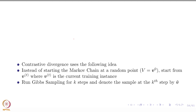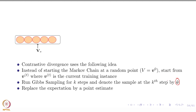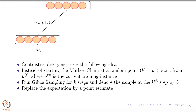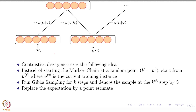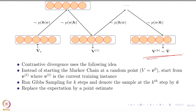You run Gibbs sampling for K steps and denote the sample at the K-th step as V tilde. Starting from a training sample, given the visible units you sample the hidden units, and given the hidden units you sample the visible units — this is exactly the block Gibbs process — and you run this for K steps. Whatever you get after K steps, you call it V tilde.